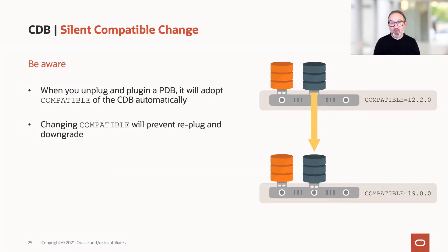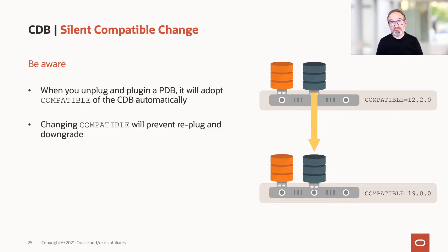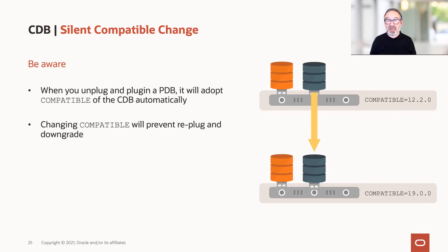In this example, we have a pluggable database in a container database where COMPATIBLE is set to 12.201. I unplug it and plug it into a container database where COMPATIBLE is 19.00 — that works fine. But when you study the alert log, you'll find there's a silent compatible change that you didn't explicitly do. It happens because all PDBs automatically adopt the COMPATIBLE setting of the CDB root. This becomes tricky: if one CDB is 19.00 and another is 19.10, you couldn't plug backwards anymore, even though both are 19C container databases. So keep COMPATIBLE equal across your environments — just use the default value for the release.